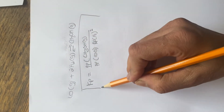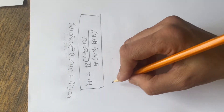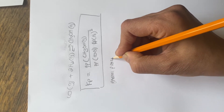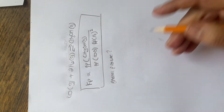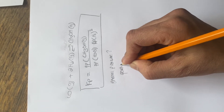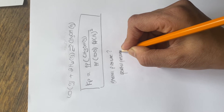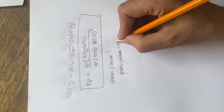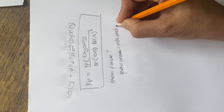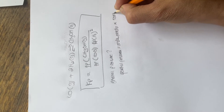The next thing is how to work out partial pressure. Partial pressure is equal to the mole fraction multiplied by the total pressure in the mixture.